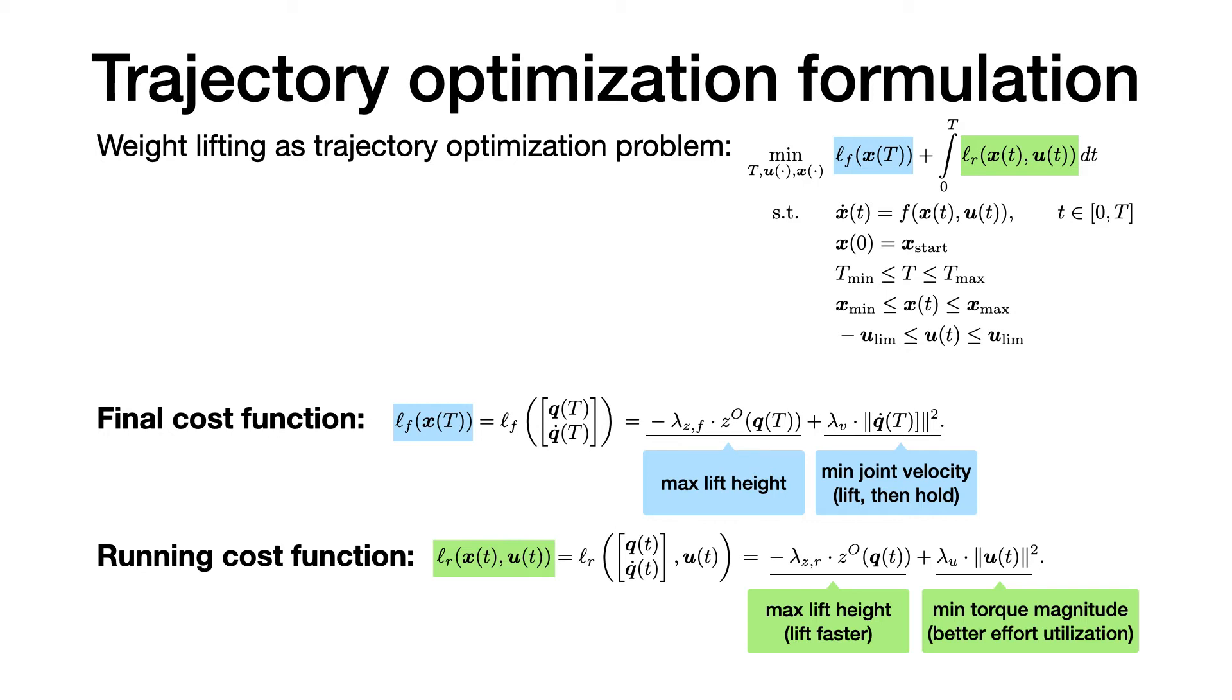The total cost includes a final cost depending on the final state of the system and the running cost which is integrated over time. The final cost includes a final lift height term and the final joint velocity term. The running cost includes a lift height term and the torque magnitude cost.